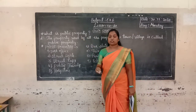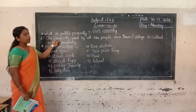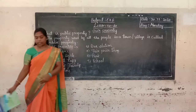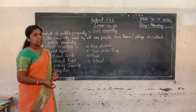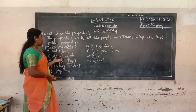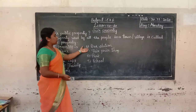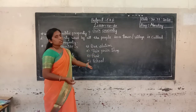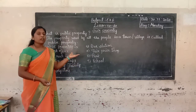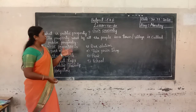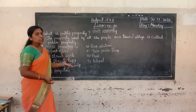Now let us revise. In this class we have learned about public property. What is public property? The property used by all the people in a town or village is called public property. Which are the public properties? Public properties are: post office, street lights, street taps, public toilets, hospitals, bus station, fair price shop, park, and school. Public properties are very useful to us; they fulfill our daily needs. We use these facilities — it is our responsibility. And we save these public properties — that is also our responsibility.